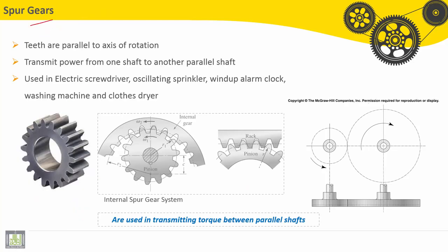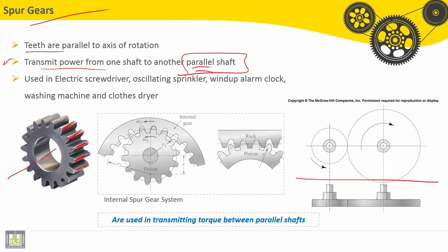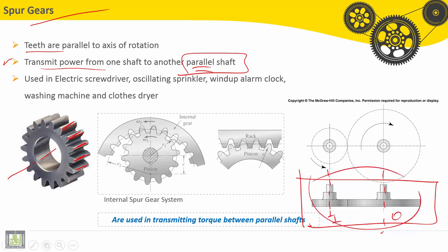Let's see some features of spur gears. First, teeth are parallel to the axis of rotation — you can see here that if this is the axis of rotation, the teeth are parallel to it. Second, spur gears transmit power from one shaft to another parallel shaft. In this gear train, this is the input shaft and this is the output shaft, so both shafts are parallel.